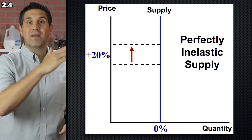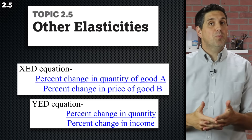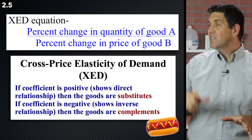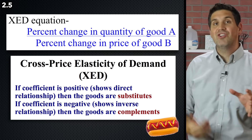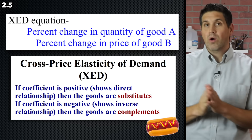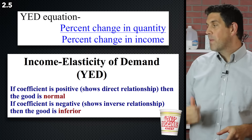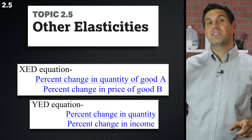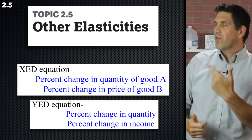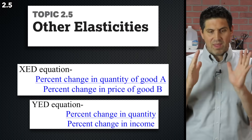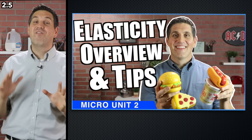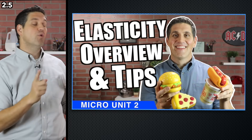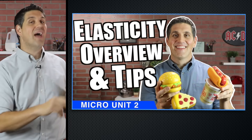In topic 2.5, we have cross price elasticity and income elasticity. For cross price elasticity, it's the change in the quantity of one product relative to a price change in a different product — it tells you if two products are substitutes or complements. Income elasticity shows you the change in quantity from a percent change in income, and tells you if the good is normal or inferior. Watch out — these use percent change in quantity and percent change in price or income, not the raw change. Practice topics 2.3 through 2.5 on the study guide.